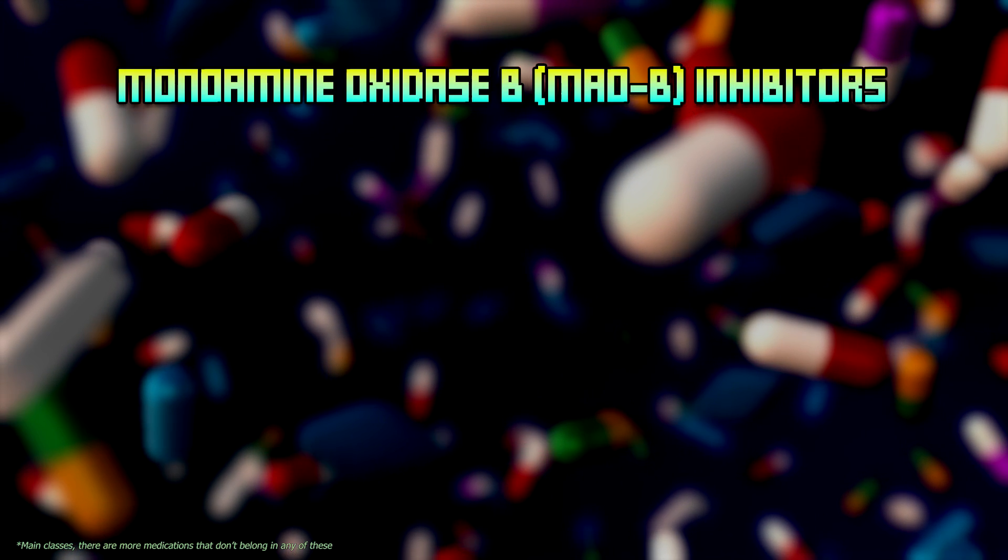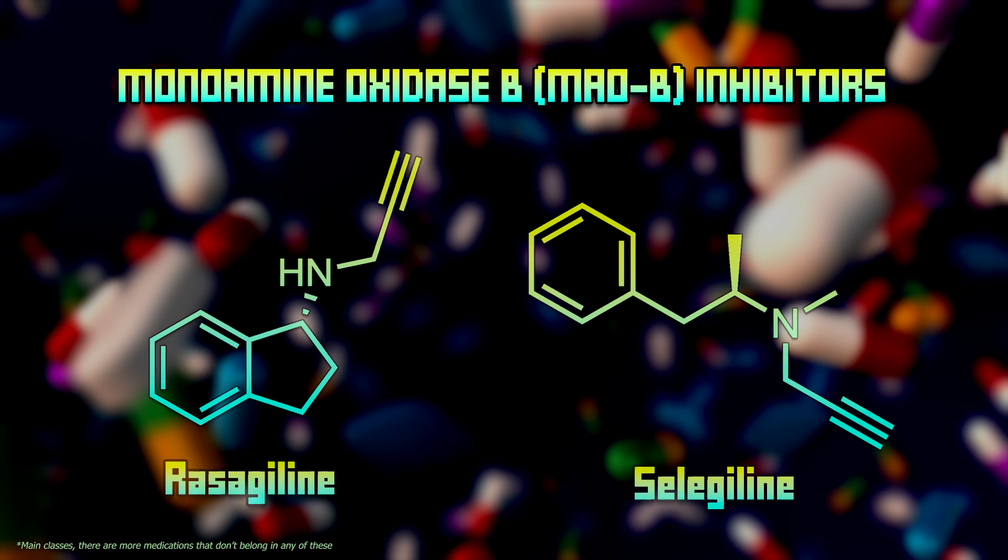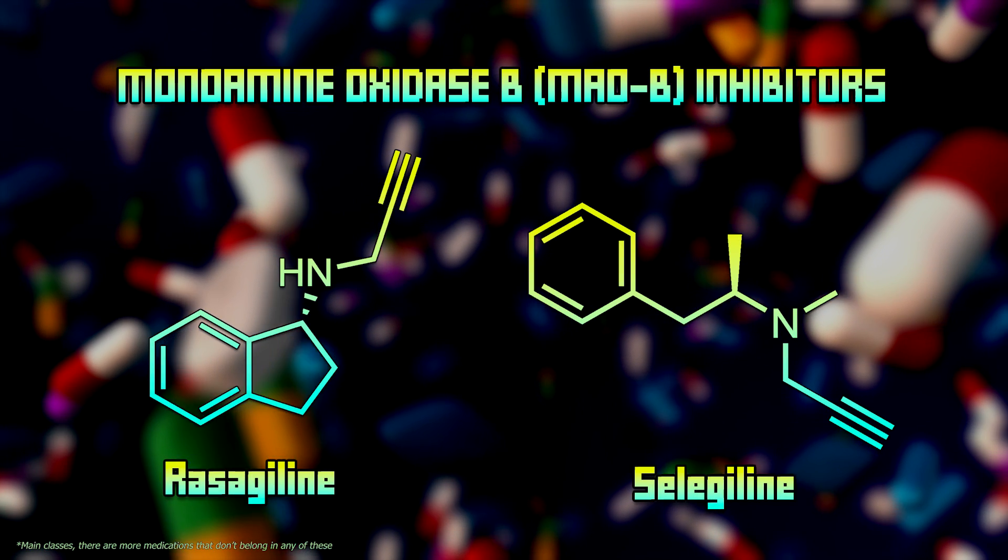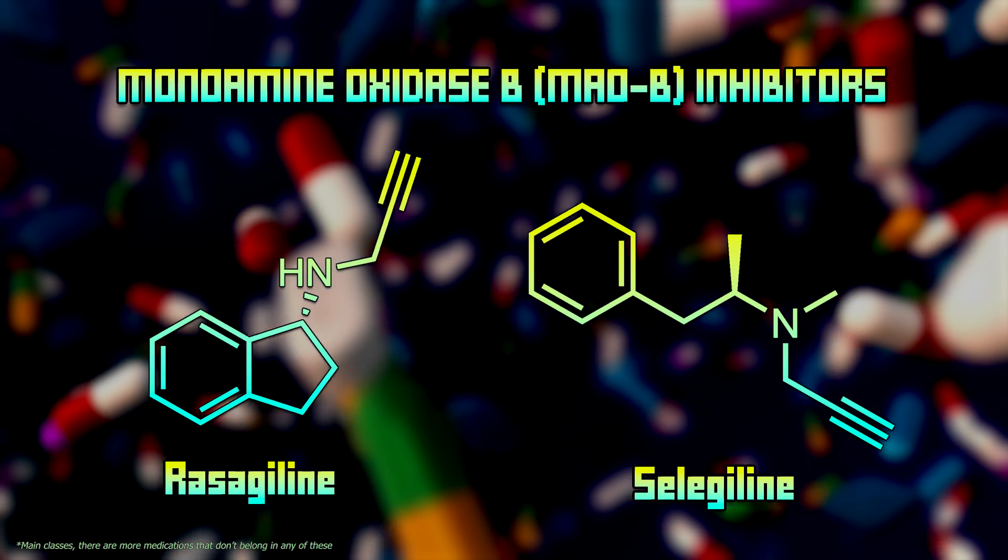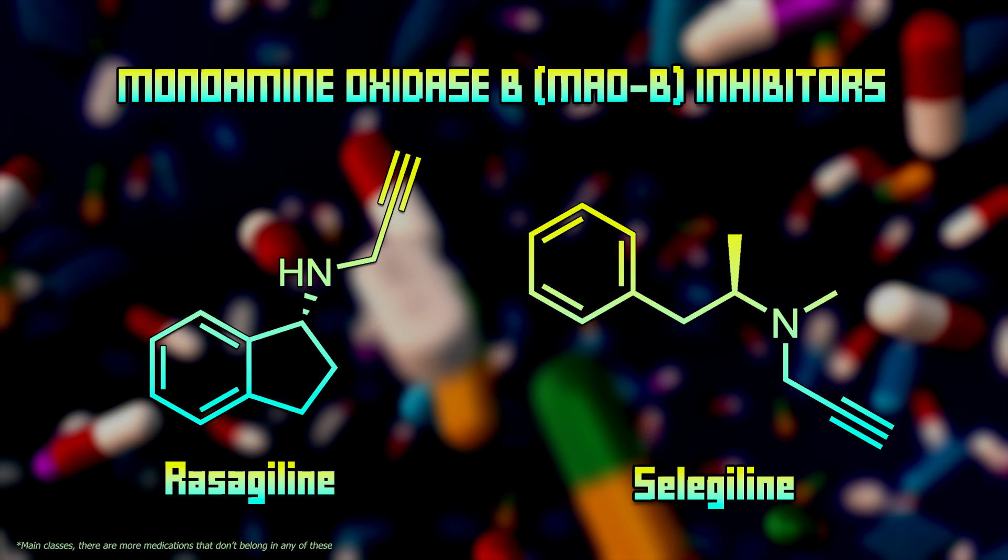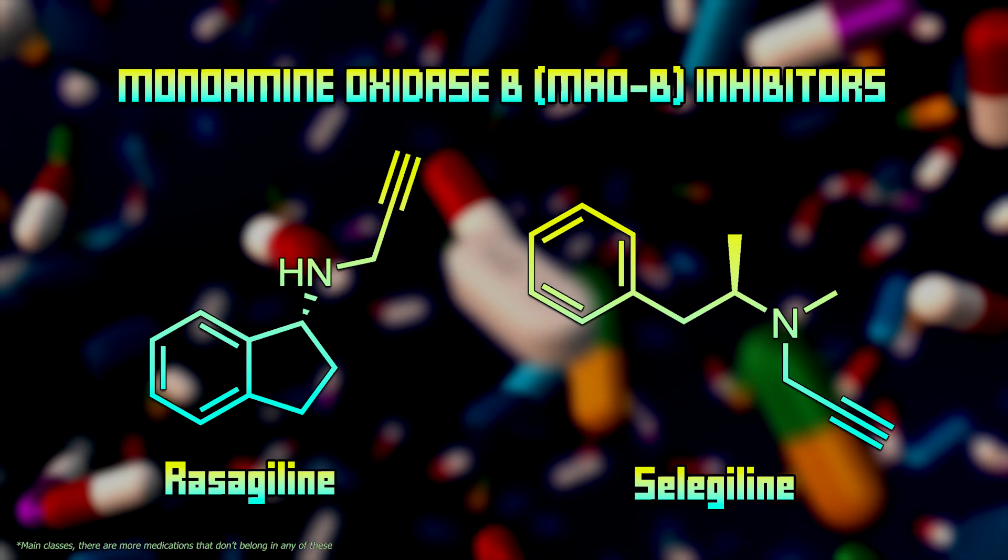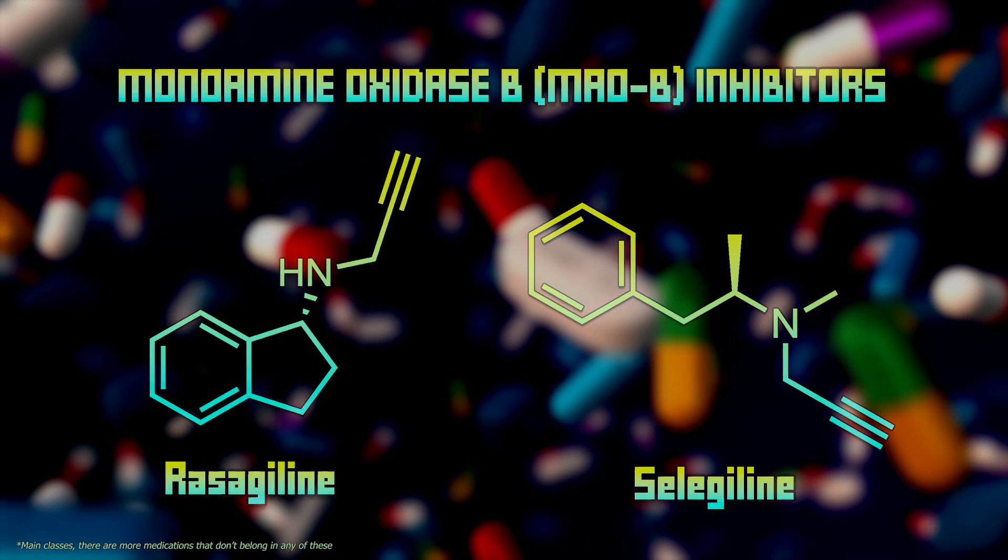The third class is monoamine oxidase inhibitors, or MAO-B inhibitors for short. MAO-B inhibitors inhibit the enzyme monoamine oxidase B, which breaks down dopamine in the brain. By blocking this enzyme, these medications increase dopamine levels and prolong its effects.